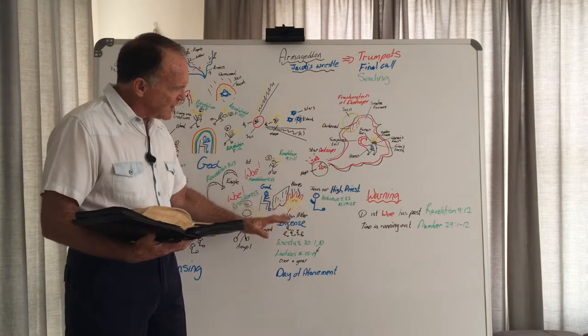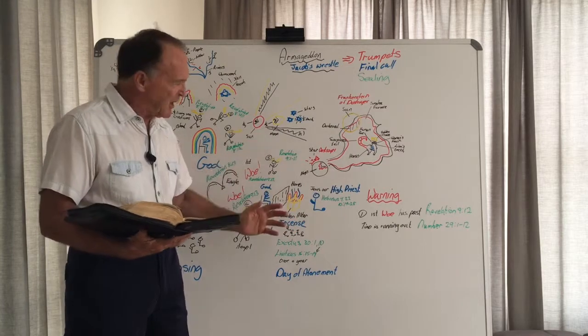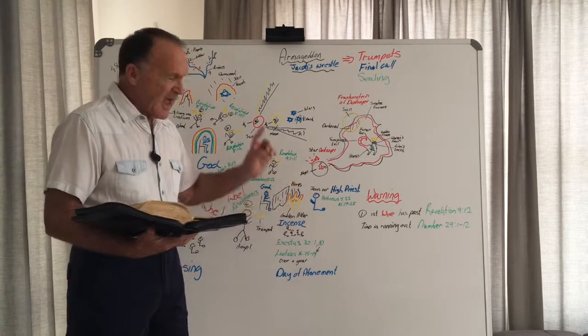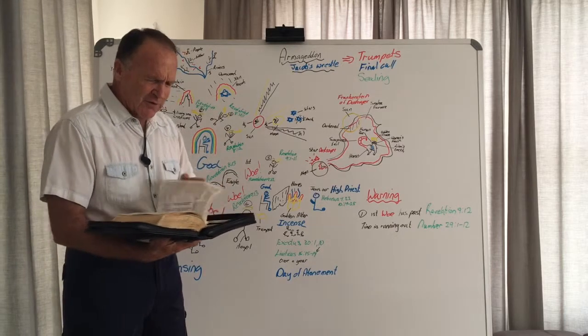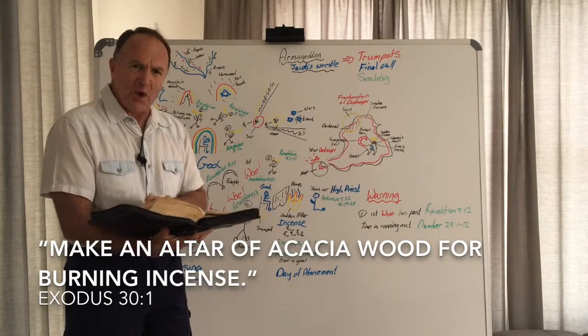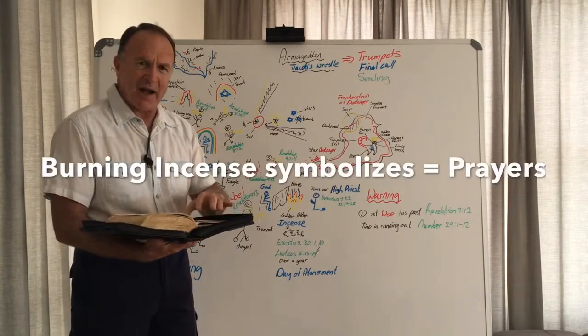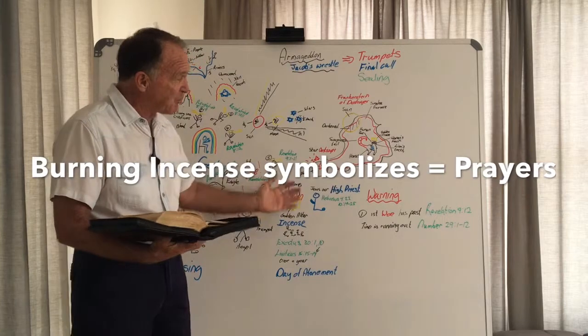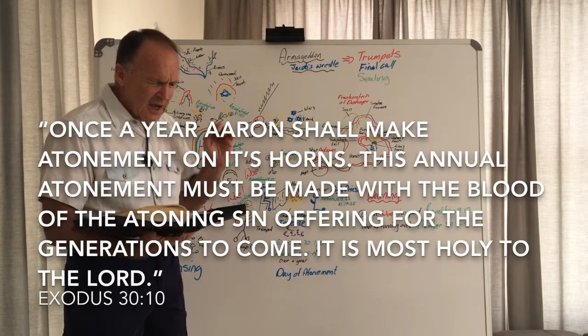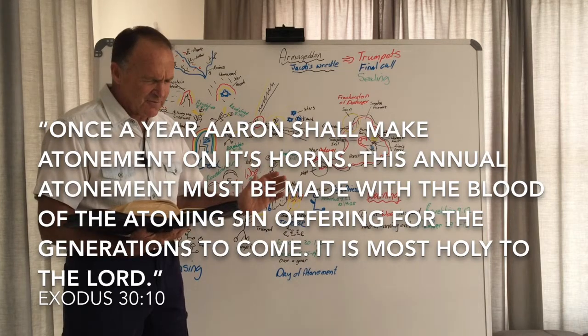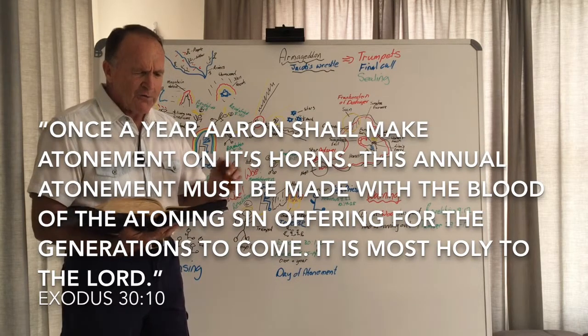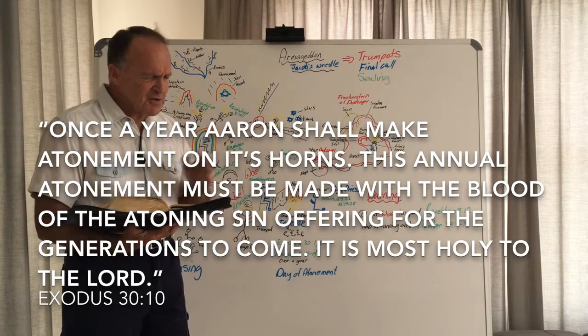This golden altar symbolized the prayers of God's people and the request for forgiveness. On the altar, there were four horns on each corner. In Exodus chapter 30, verse 1, we read, Make an altar of acacia wood for burning incense. Incense always symbolized the prayers of God's people and the prayers of our high priest, Jesus Christ. Then verse 10 says, once a year, Aaron shall make atonement on its horns. This annual atonement must be made with the blood of the atoning sin offering for generations to come. It is most holy to the Lord.